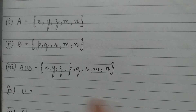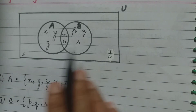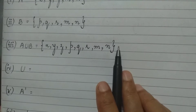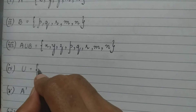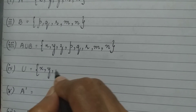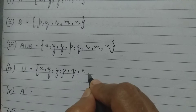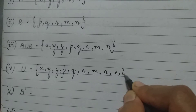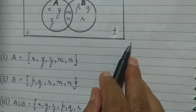Then I have to write the universal set U. So it will be all the elements inside — that is A union B — plus the two other elements outside, which are S and T. So I write all the elements: X, Y, Z, P, Q, R, M, N, S, and T. S and T were the elements which were outside the sets A and B.